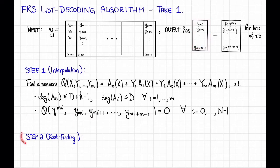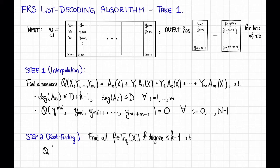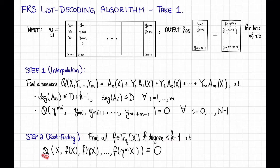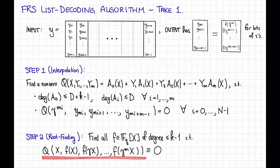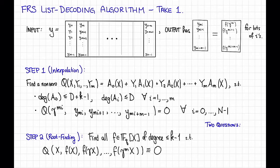Assuming we can do step 1, we're going to move on to step 2, which is to find some appropriate roots of Q. In this case, that's going to mean finding all polynomials F of degree at most K minus 1, so that when we take Q and plug in X, F(X), F(gamma·X), ..., F(gamma^M · X) — that is, we plug in F of gamma^i times X for Y_i — this gives us some univariate polynomial in X, and we want that univariate polynomial to be identically equal to 0. So step 2 is to find all such polynomials F and return them as our list. As usual with these sorts of algorithms, we have two questions: first, can we do step 1, and if so, how? And second, is step 2 a good idea, and also how can we do it?